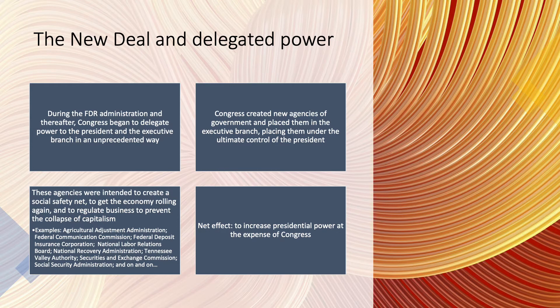I've listed a number of the agencies here: the Agricultural Adjustment Administration, the FCC, the FDIC, the National Labor Relations Board, and many more — almost all of them still around today. They regulate many different aspects of our economy. Congress, because they have the legislative power, would normally be making the rules that these agencies now make. Congress delegated the power to legislate — they essentially gave away part of the legislative power to agencies in the executive branch, putting themselves in a supervisory role as opposed to a legislative role.